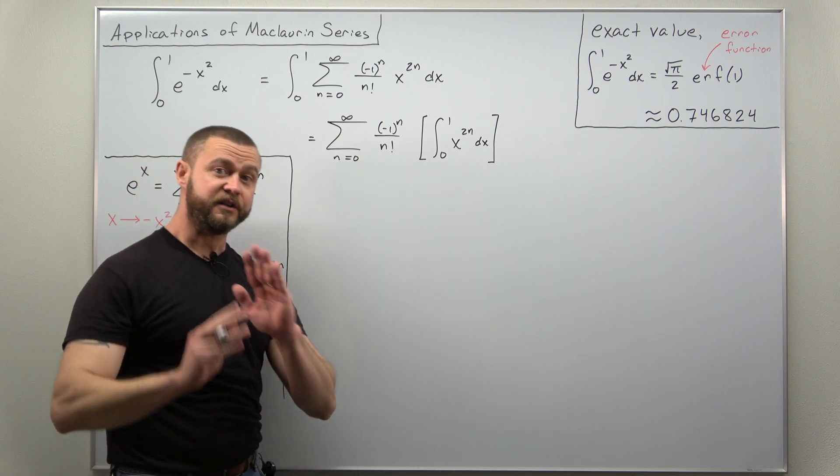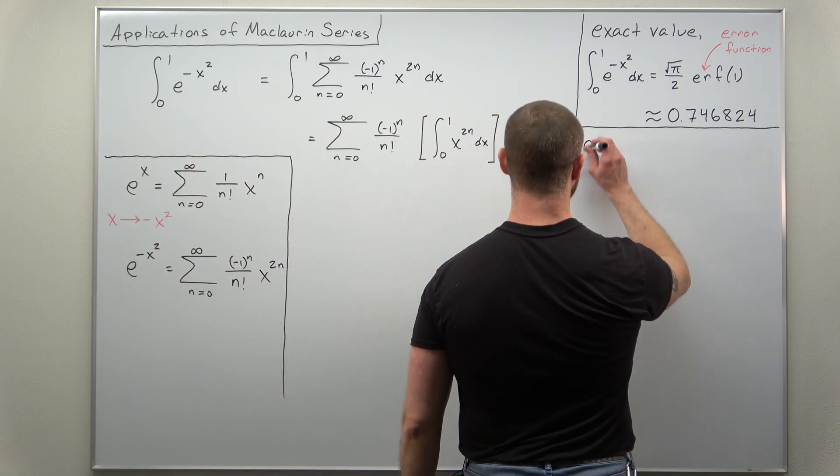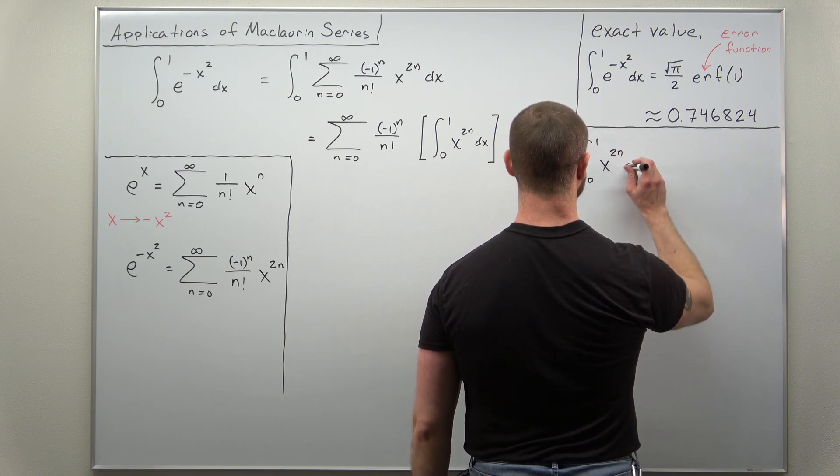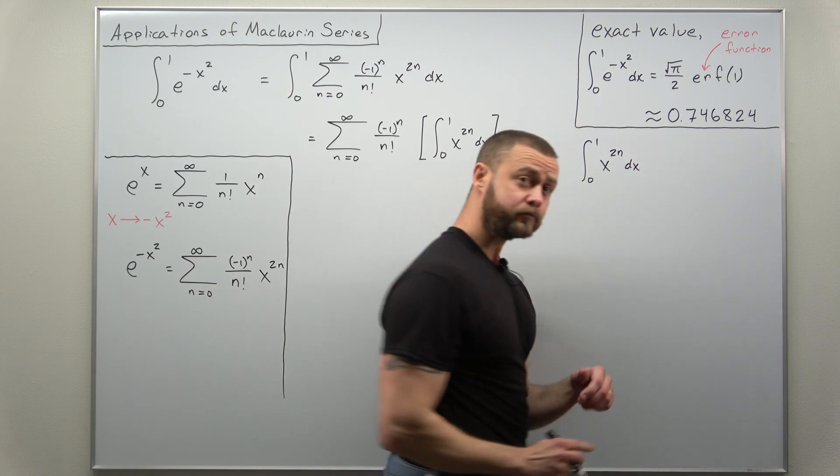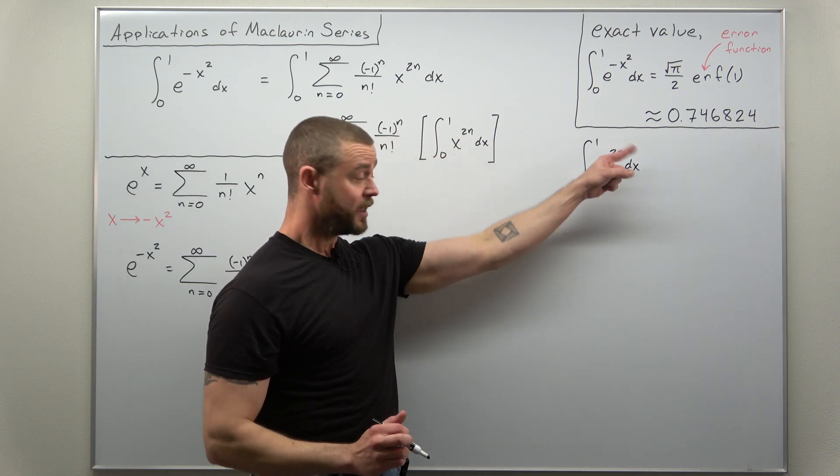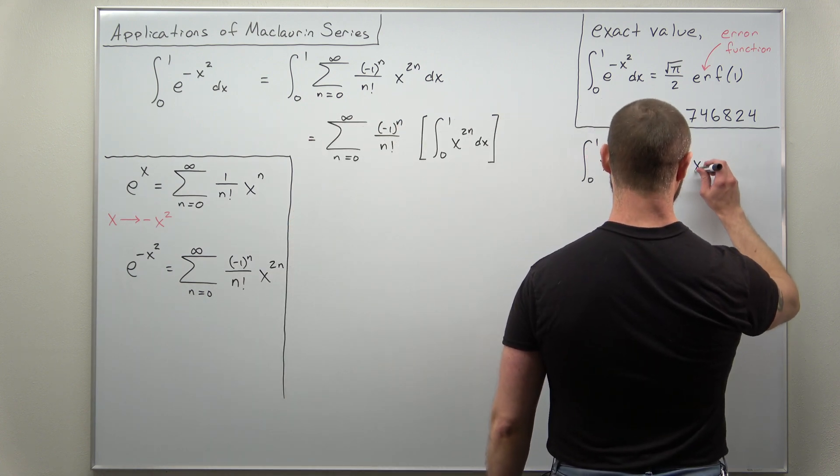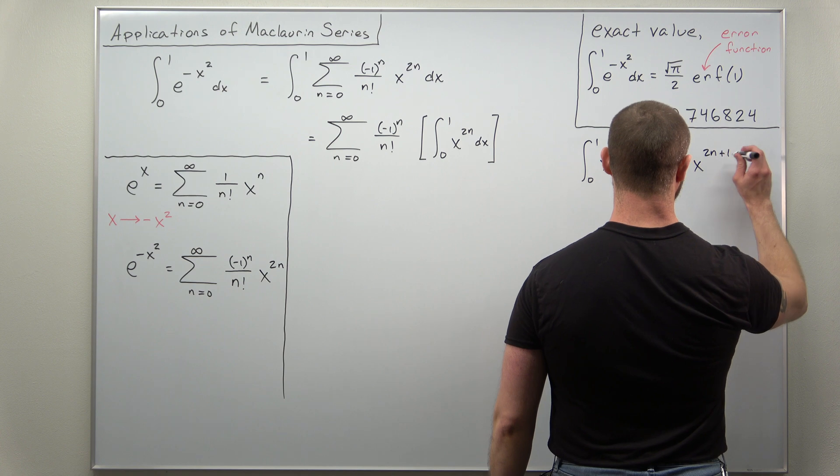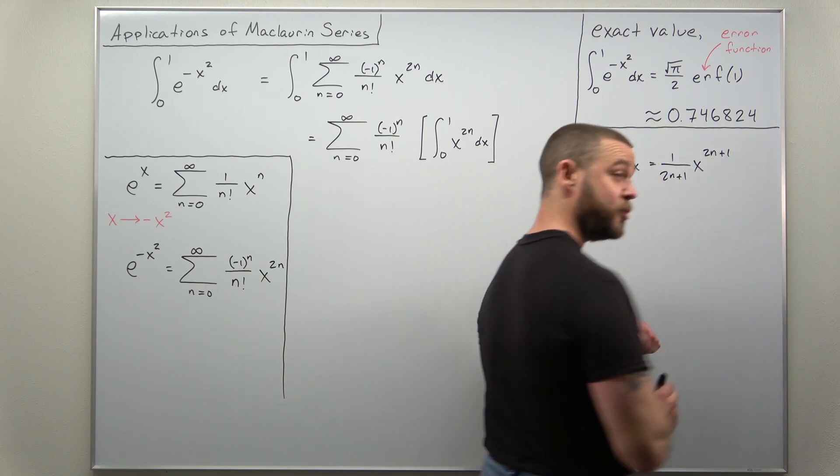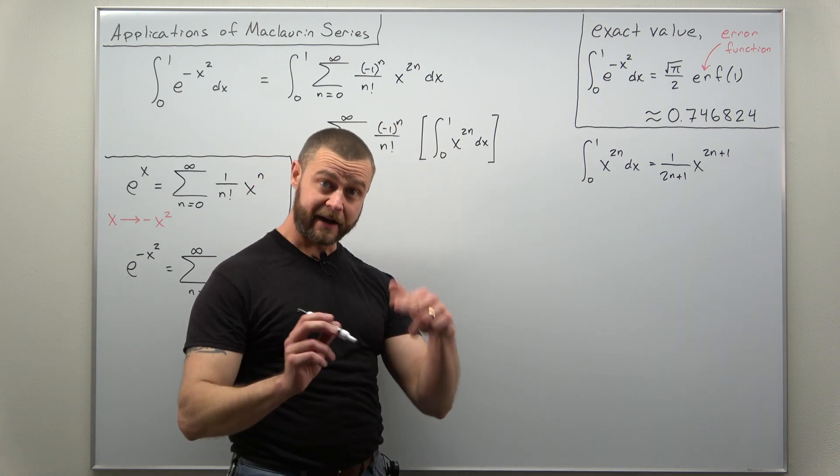And that integral is ridiculously simple. Let's go ahead and do that over to the side here. You have the integral from 0 to 1 of x to the 2n, and we can evaluate that with the basic power rule for antiderivatives. Add 1 to that exponent, so you'll get x to the 2n plus 1 divided by that new power, and because this is a definite integral we'll evaluate that from 0 to 1.